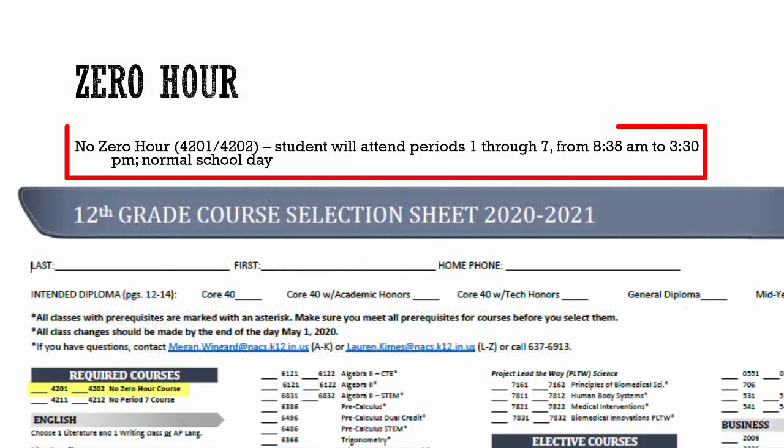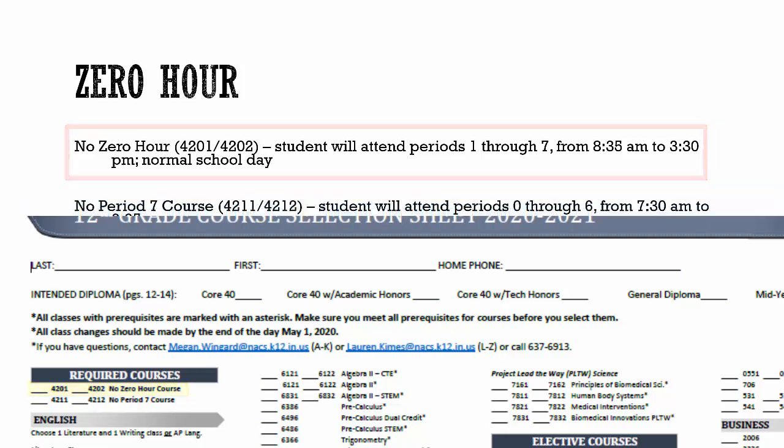Please get out your senior year course selection sheet. The first course listed is no zero-hour course. Zero-hour is basically a class that meets before the regular school day begins and is considered period zero. If you do not want a zero-hour course and just want to attend the regular seven-period day, all you need to do is pick no zero-hour course.